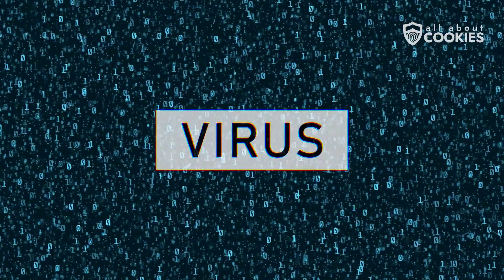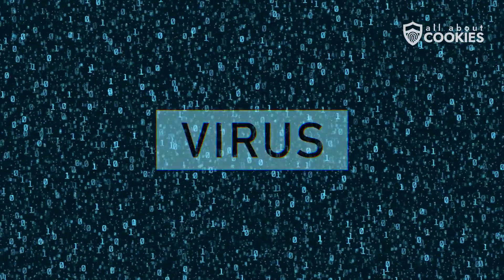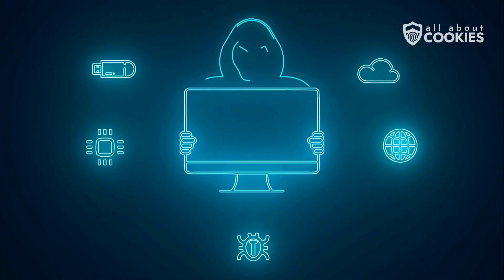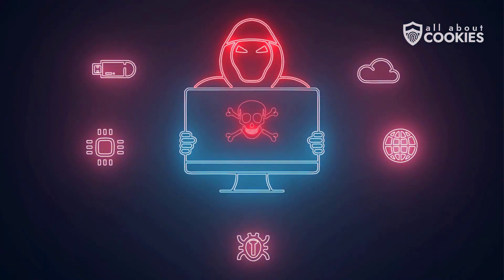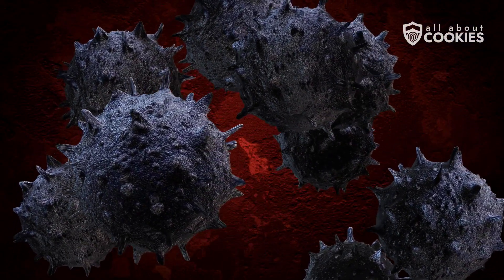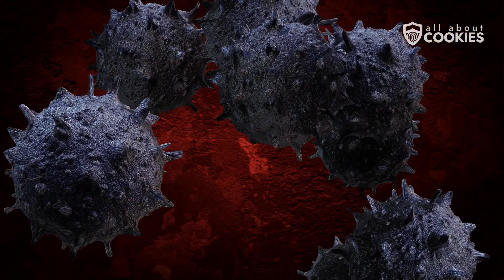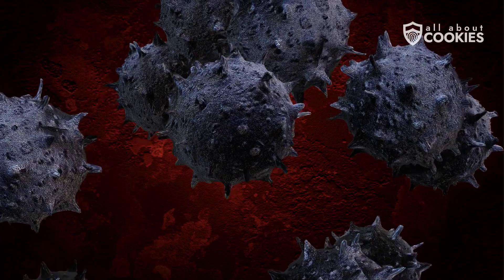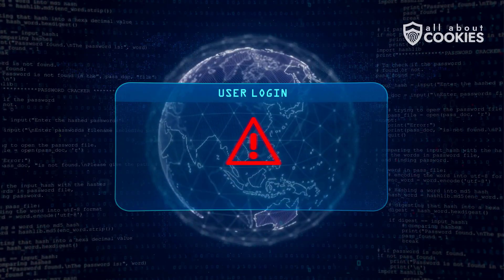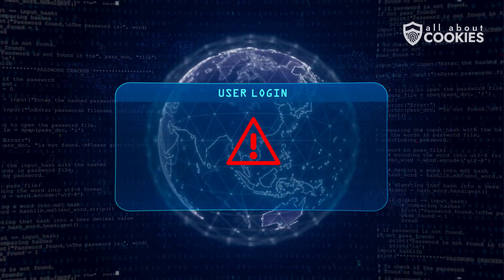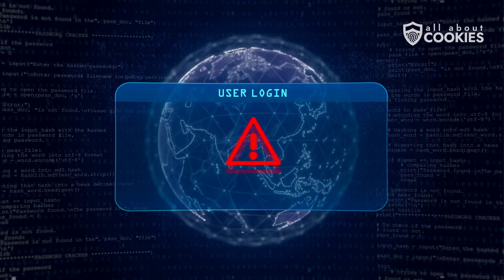Number one: computer virus. While malware and virus are often used interchangeably, a computer virus is actually a type of malware. Traditional computer viruses are malicious codes that attach themselves to legitimate files. When you open infected files, the virus spreads, causing data corruption or system crashes.